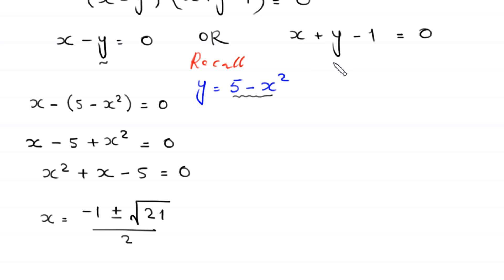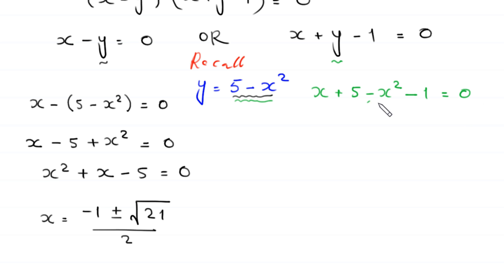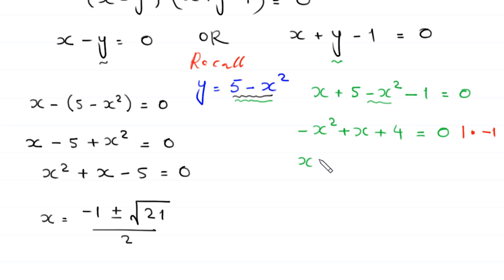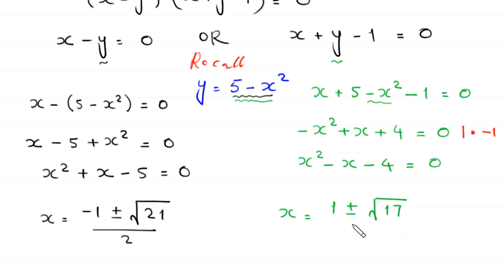For the second case, substituting y equals 5 minus x squared into x plus y minus 1 equals 0 gives x plus 5 minus x squared minus 1 equals 0. Rearranging, negative x squared plus x plus 4 equals 0. Multiplying both sides by negative 1 gives x squared minus x minus 4 equals 0. Solving this quadratic gives x equals 1 plus or minus root 17 divided by 2.